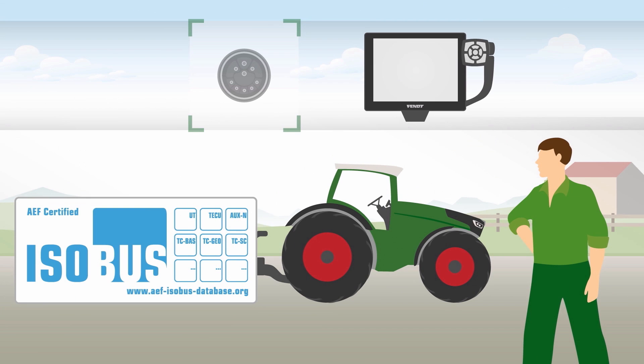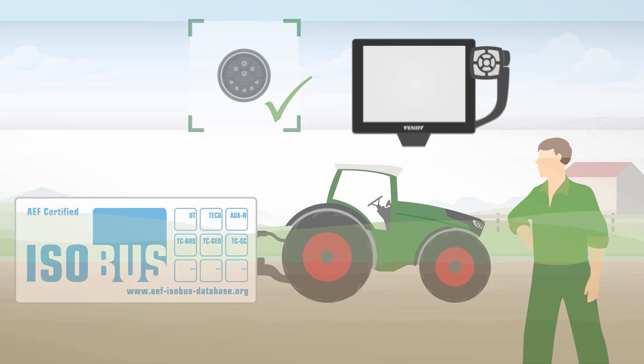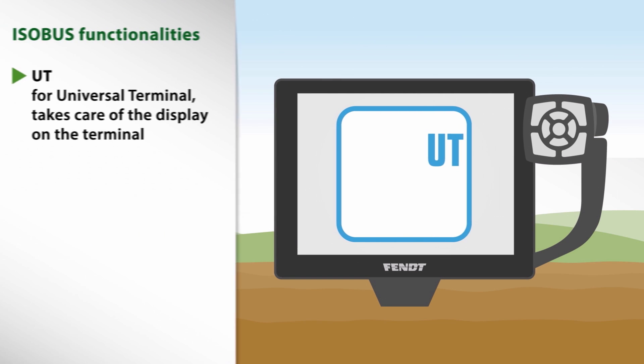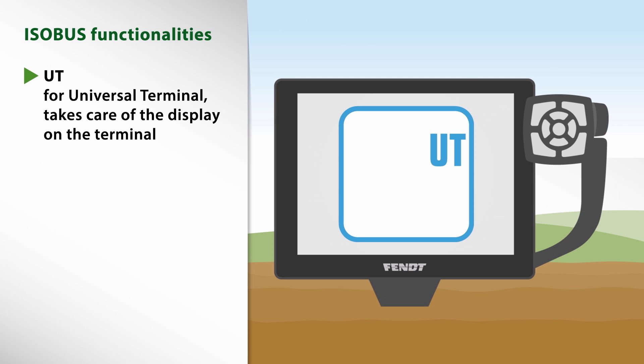FENT can already process all the specified ISOBUS functionalities today, completely automatically. UT, for Universal Terminal, manages the display on the terminal.